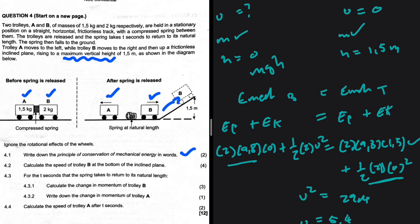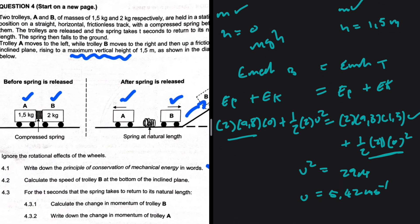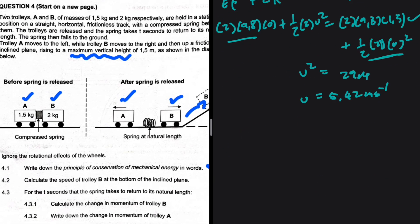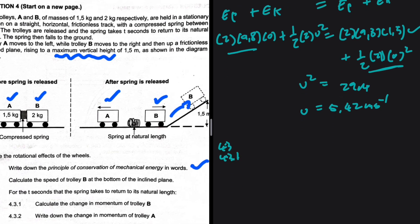So v equals 5.42 meters per second. The question asks for speed, so we don't need to give a direction. Then for 4.3.1: for the T seconds that the spring takes to return to its natural length, calculate the change in momentum of trolley B.